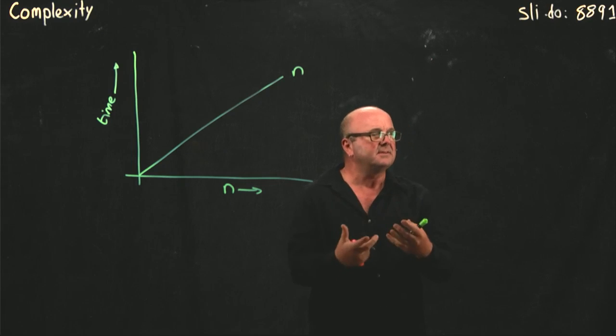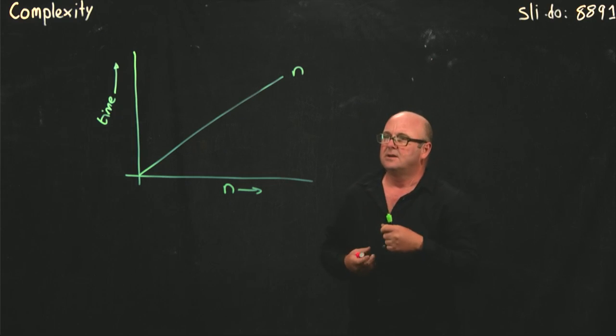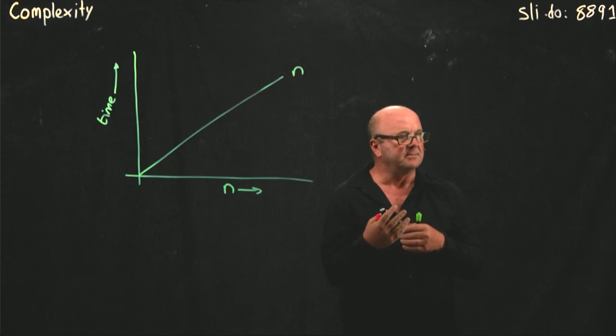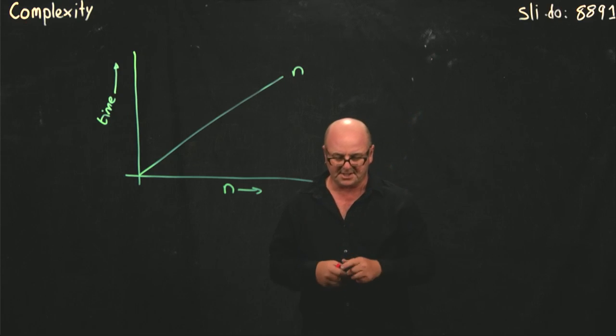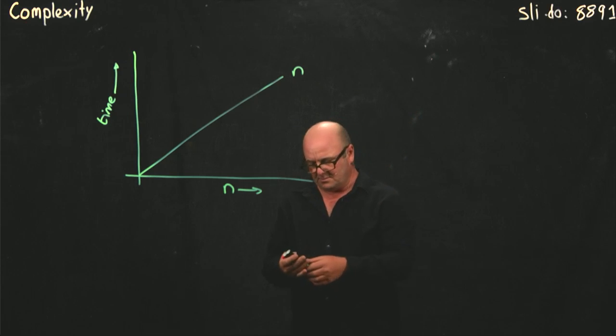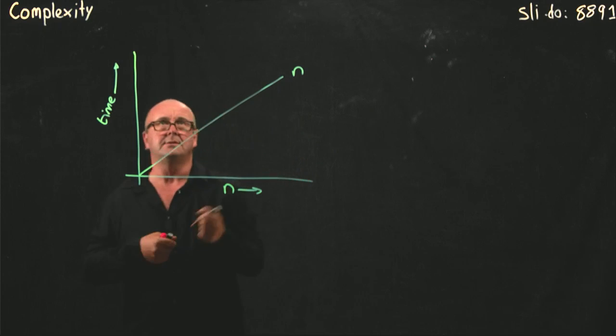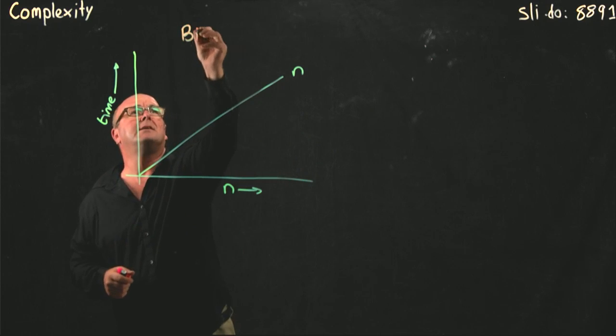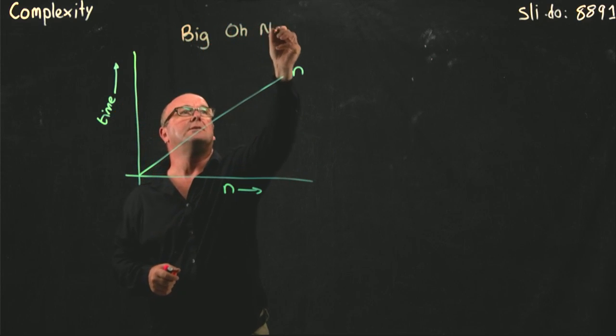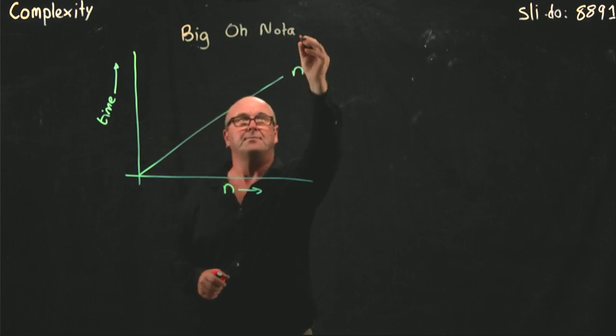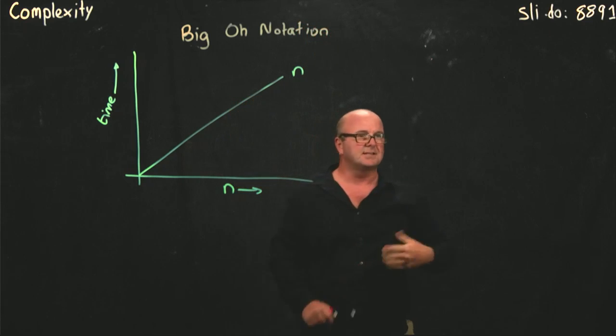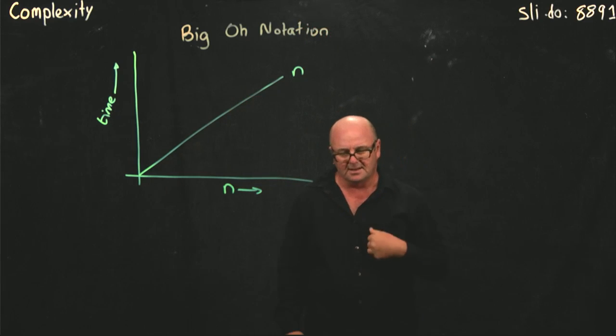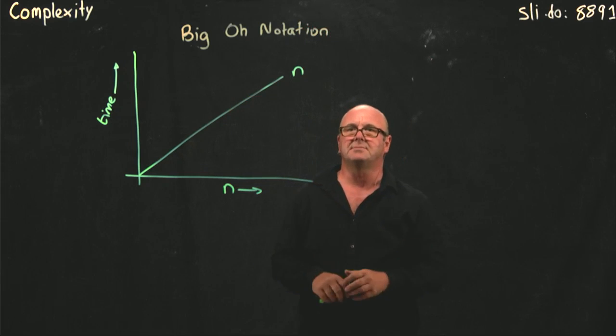And we'd like some kind of notation so that we can describe how one algorithm compares to another algorithm, or how these two things compare, how two different things compare to each other. And so we have what we call big O notation. And it's called big O notation, as you'll see in a second, because that's one of the terms. And it's the one that we use most frequently in computer science.